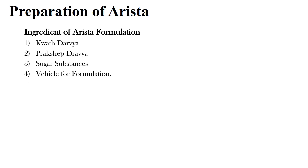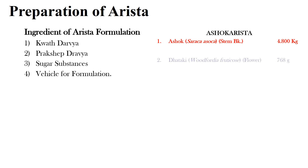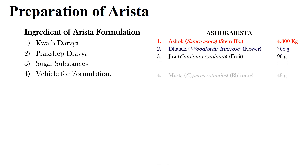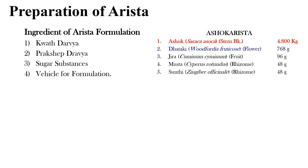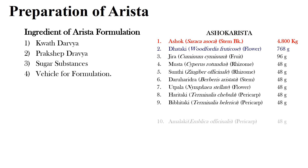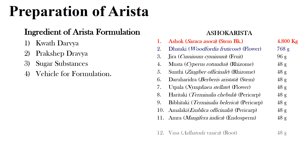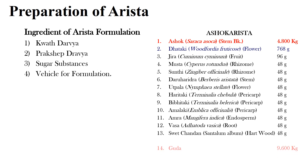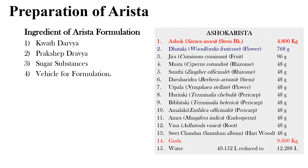This can be better visualized by giving an example of Ashoka Arisht. In the case of Ashoka Arisht, Ashoka bark is the Kwath Dravya. The remaining herbs such as Dhataki, Jira, Musta, Sunthi, Daruharidra, Utpala, Haritaki, Bibhitaki, Amalaki, Amra, Vasa, and Shveta Chandan are the Prakshepa Dravya. The sugar substance is jaggery, and the vehicle for formulation is water.